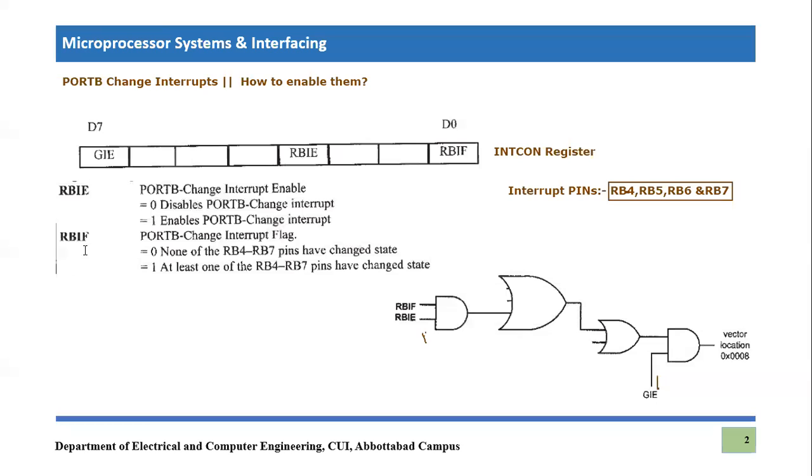So how one can do it? It's very simple. BSF INTCON, RBIE. It is enabled then BSF INTCON, GIE. So if these two lines are written, that means we have provided RBIE equals to 1 and GIE is equals to 1.